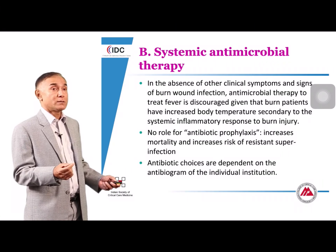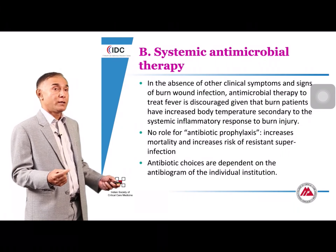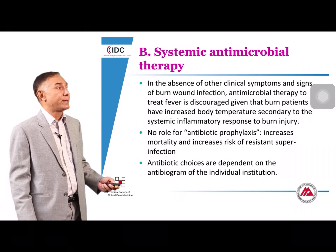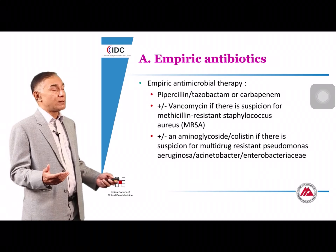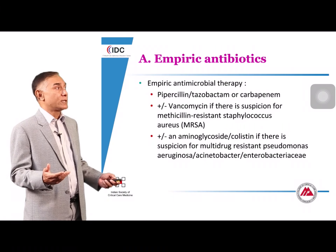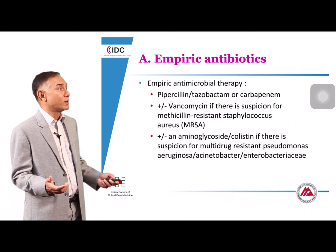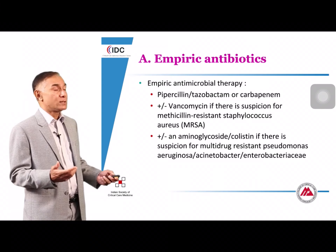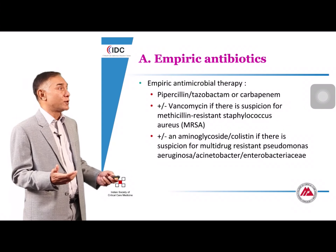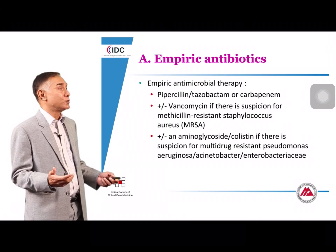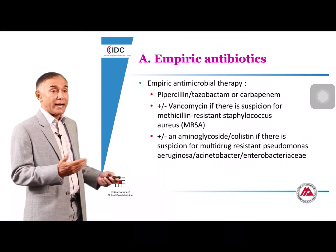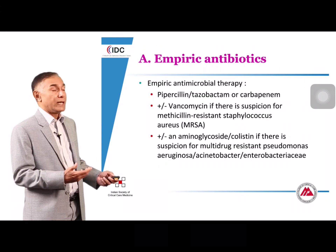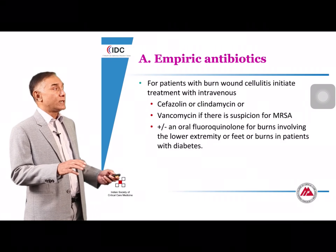The choice of antibiotics depends on the local antibiogram. Typical agents include piperacillin-tazobactam or a carbapenem to cover ESBLs; vancomycin is added if MRSA incidence is high in the unit — often not the case in many Indian ICUs. An aminoglycoside or colistin may be needed if carbapenem resistance in Pseudomonas, Acinetobacter, or Enterobacteriaceae is prevalent.